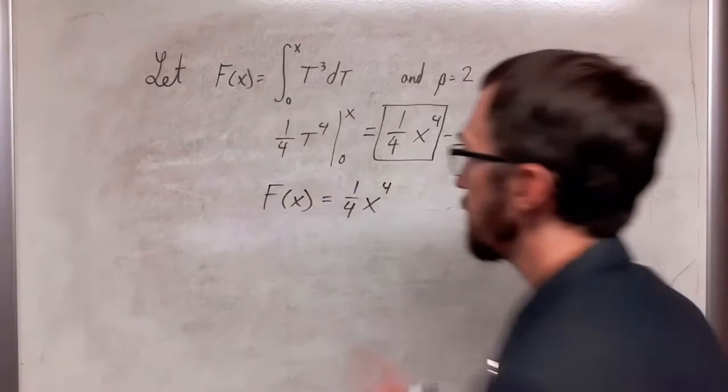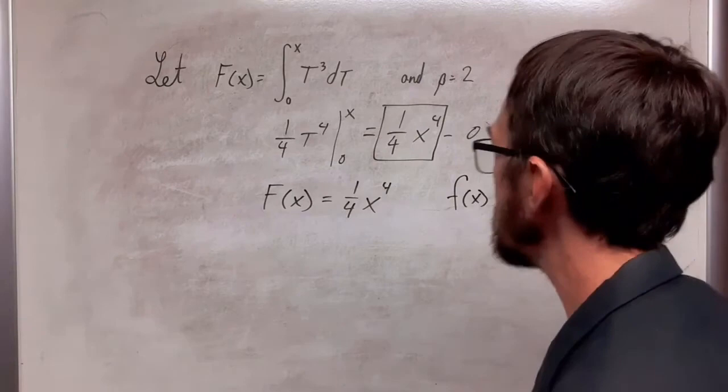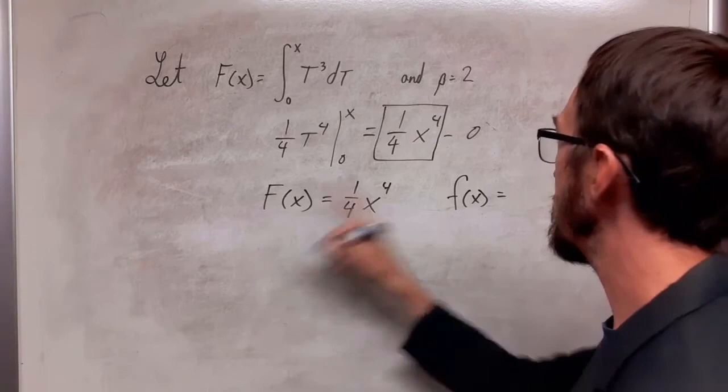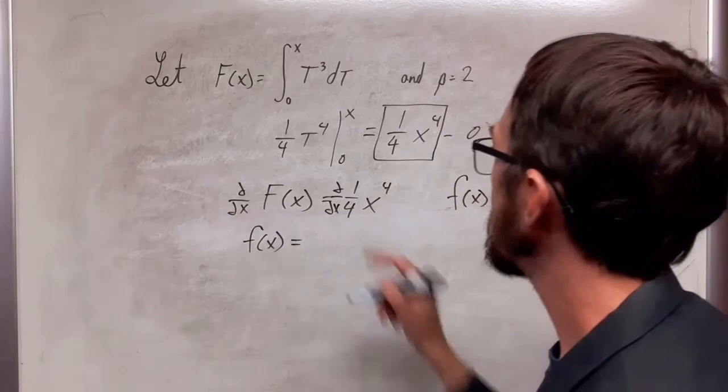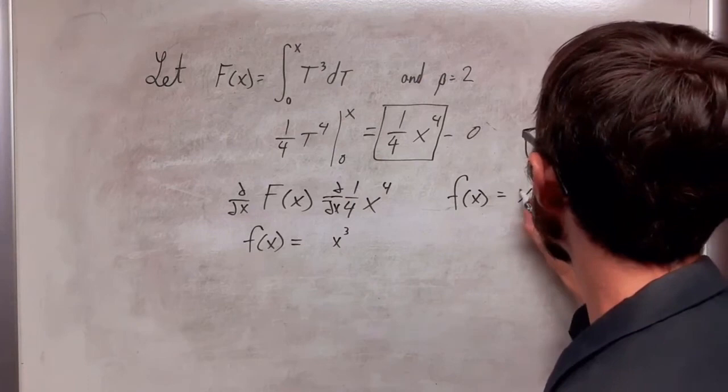But then we need to find little f of x, and to do that we're just going to take the derivative of big F of x. When we take the derivative of this we get little f of x, and when we take the derivative of this we get x cubed, so little f of x is x cubed.